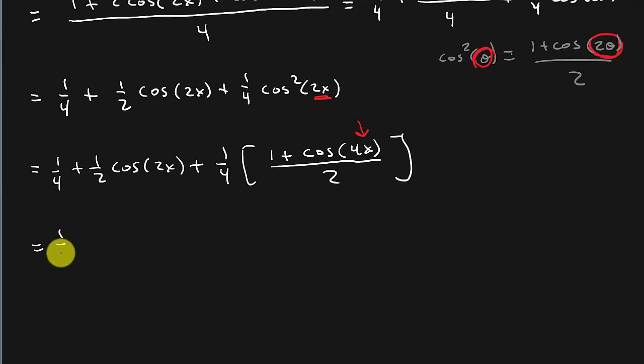All right. So now we've got 1 fourth plus 1 half cosine 2x plus, and now let's write this in several steps. We could probably all do it in one step, but just let's write it out. So let's split this up. That's 1 half plus 1 half cosine 4x.